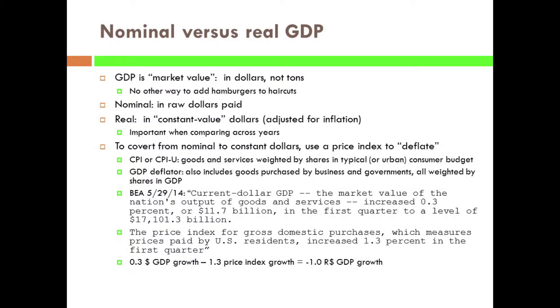One way to express real GDP is that we're measuring in constant dollars. The typical measure in recent years has been 2009 dollars. When we see prices in 2014, we ask how much has the purchasing power of the dollar declined by comparing 2014 prices for some basket of goods to 2009 prices. Since prices have gone up, we divide by something greater than one to deflate that measure back to 2009 purchasing power.